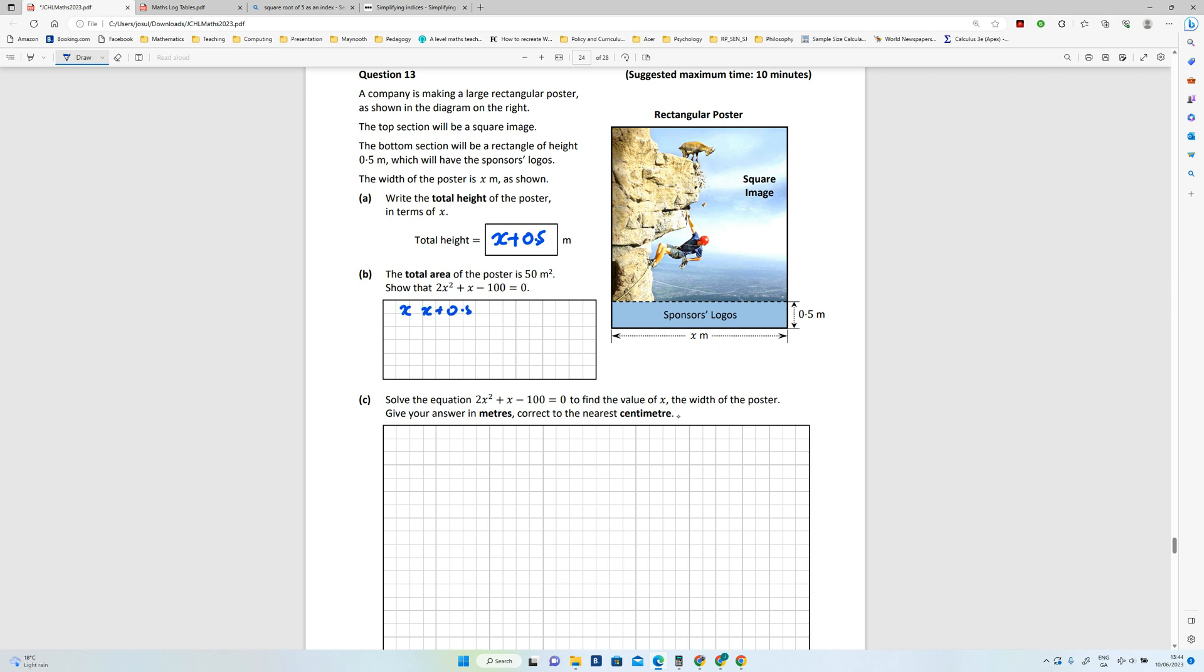If I multiply x by x plus 0.5, it's basically saying I should get 50 meters, so that's going to turn into x squared plus 0.5x is equal to 50.